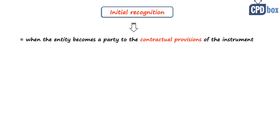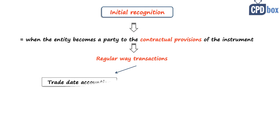So unlike other standards, IFRS 9 puts more focus on the contract rather than on future economic benefits. IFRS 9 then clarifies regular way transactions — purchases or sales — and you can use two types of accounting: trade date accounting, where the entity recognizes an asset bought and de-recognizes assets sold on the trade date.